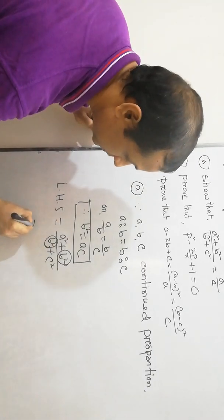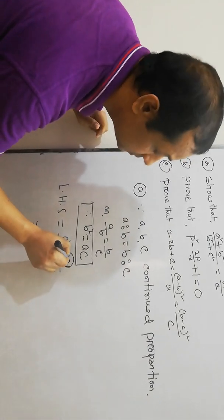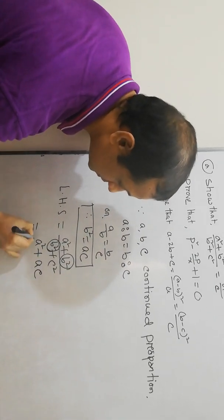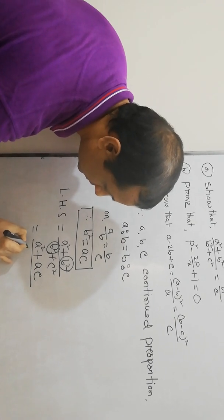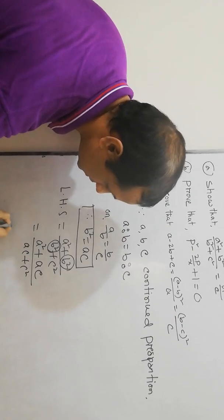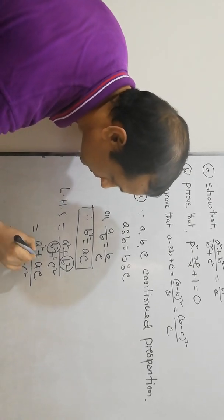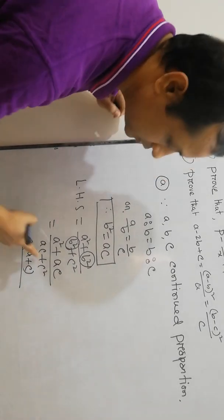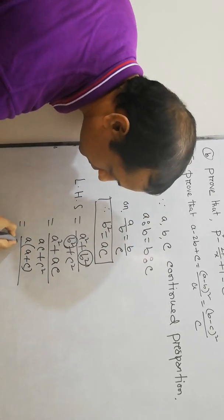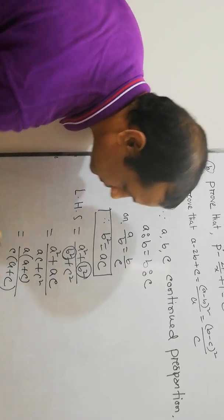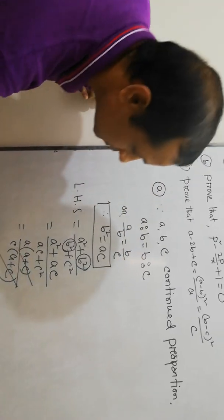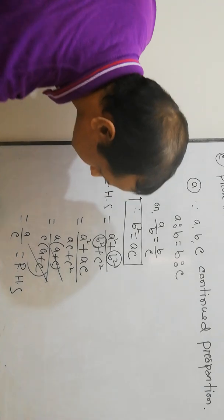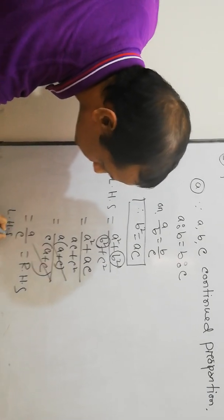Now putting the value of B² — B² equals AC — into the numerator and denominator: A² + AC divided by AC + C². Then taking common A from numerator gives A(A + C), and taking common C from denominator gives C(A + C). The (A+C) cancels, leaving A/C. So left hand side equals right hand side.